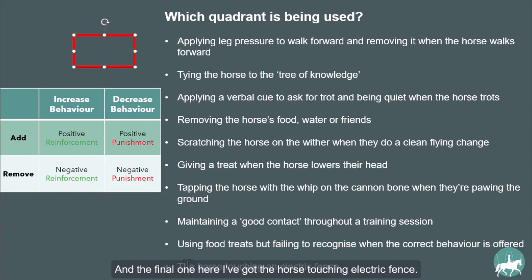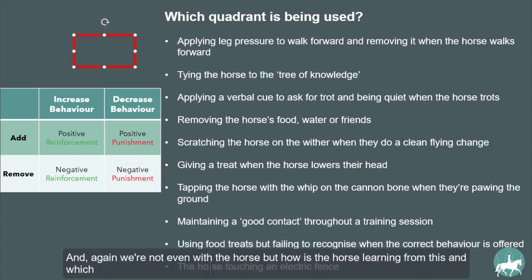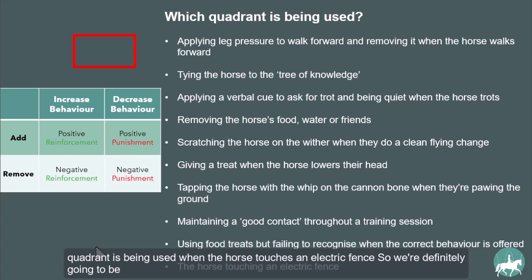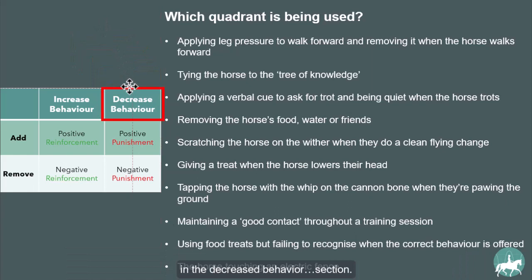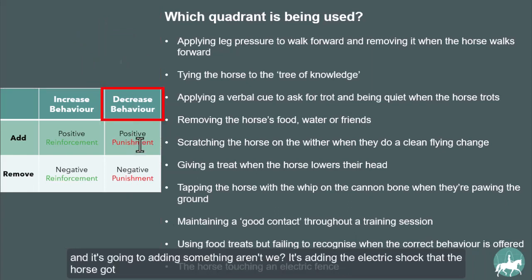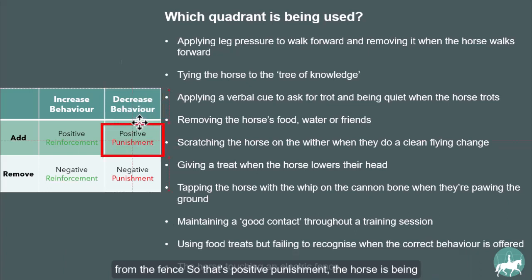And the final one: the horse touching an electric fence. We're not even with the horse, but which quadrant is being used? We're definitely in the decreased behavior section, and it's adding something — the electric shock from the fence. So that's positive punishment. The horse is positively punished by touching the electric fence.